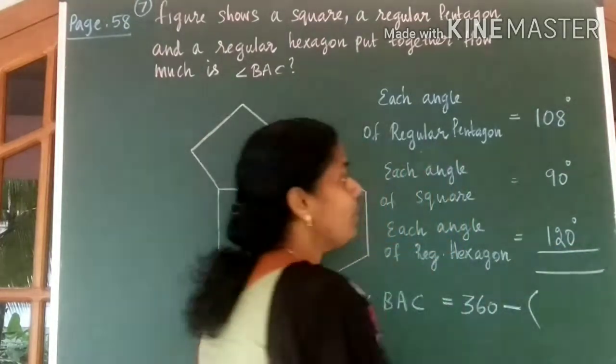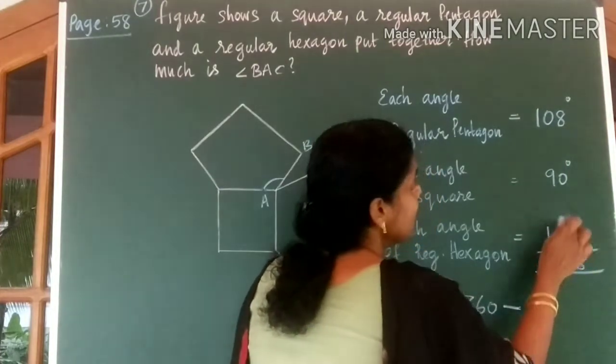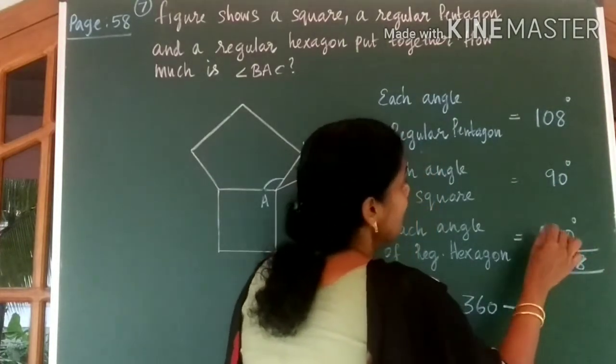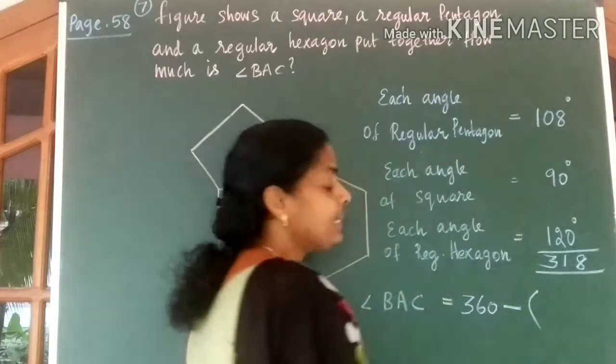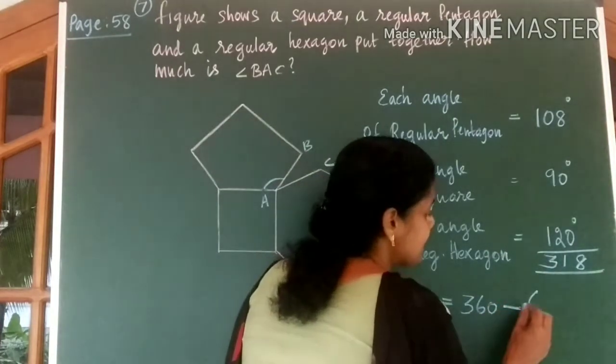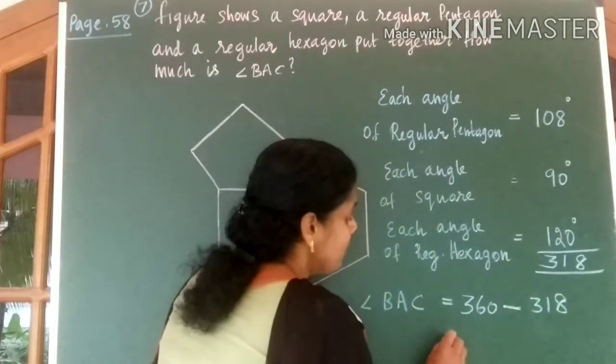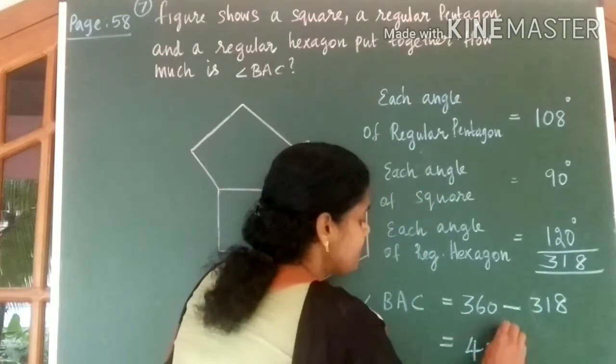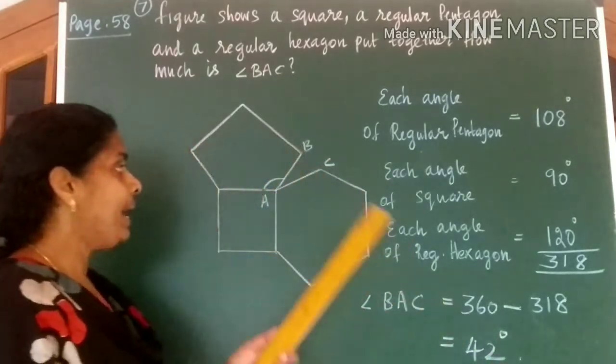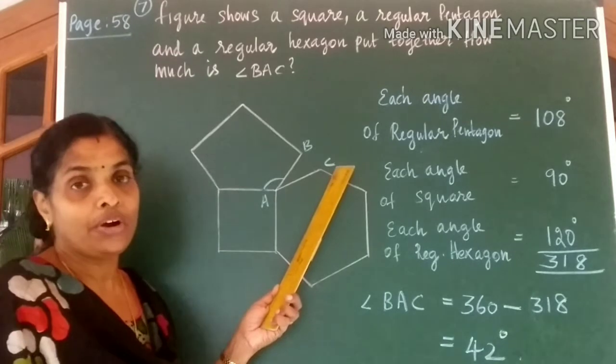So let us add the sum of the 3 angles. We get 8, 2 plus 9, 11, 1 balance you get 318. So 360 minus 318 which gives you 42 degrees. Therefore angle BAC is equal to 42 degrees.